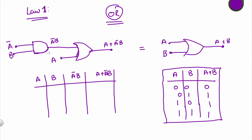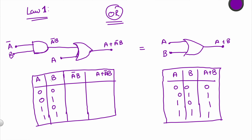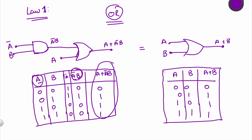For the elaborate expression, with A and B as 0,0 / 0,1 / 1,0 / 1,1 and A complement as 1,1,0,0 — A complement AND B gives 0, 1, 0, 0. Doing the OR of A with A complement B gives 0, 1, 1, 1. As you can see, this output is the exact same as a simple OR gate.